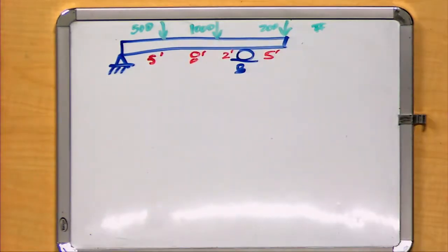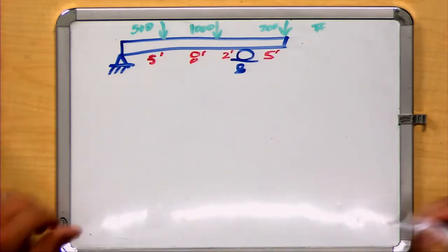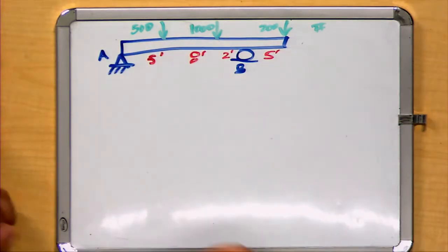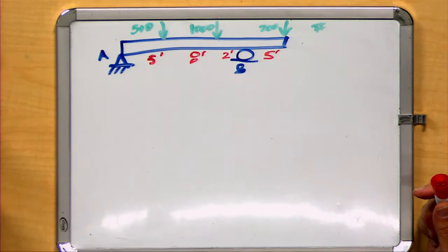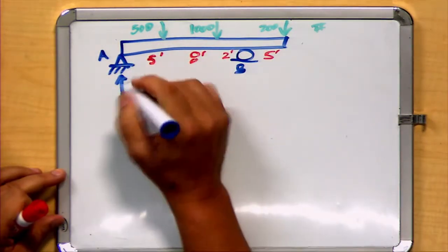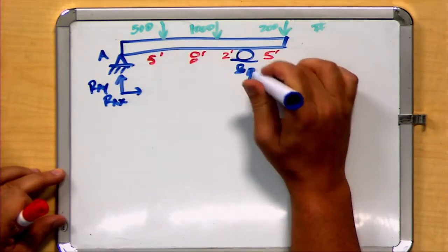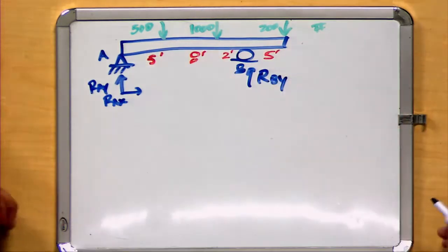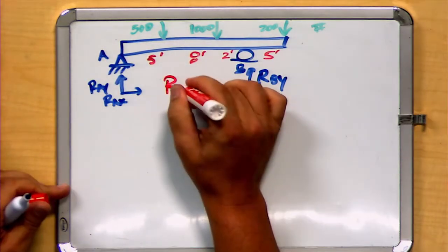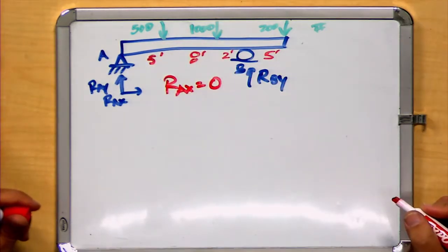Hopefully, by now, we know how to begin a problem like this, or the types of information we can gather from the loading. The first thing we're going to want to do is determine the reactions at the supports. So we expect to have reactions RAY and RAX and a reaction here RBY. Notice the simplest, the sum of forces in the X direction tell us that RAX is going to have to be equal to zero, since it's the only force being applied in the X direction.